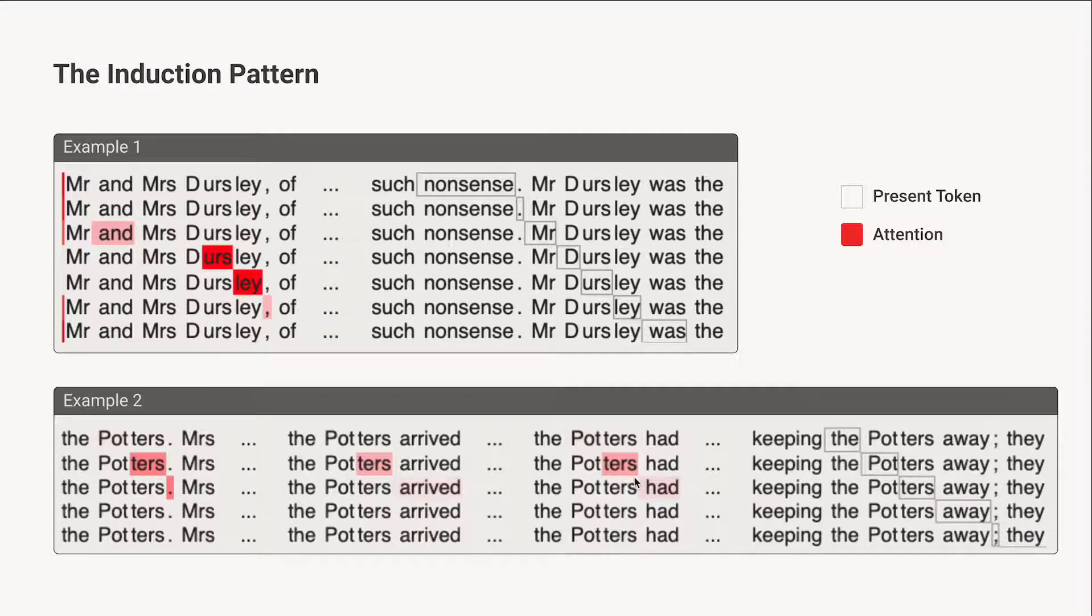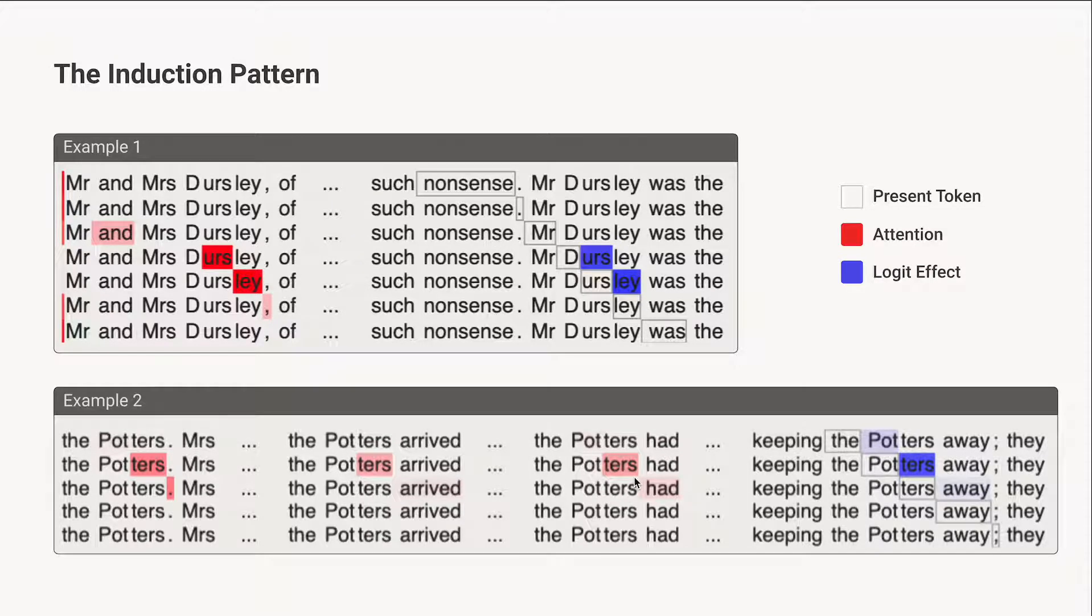A natural hypothesis is that the reason it does that is that it would allow it to predict what the next token is, because the goal of the present token here is to predict the next token. We can actually just measure that. We can just take the output of the attention head, and it just has a linear path down to the logits, so we can just run that into the logit. And even without analyzing the terms, we can just see the empirical effect on the logits. And it's indeed going and predicting ERS.